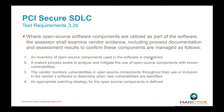Test requirement 3.2.b asks for: an inventory of open source components; a mature process to mitigate the use of open source components with known vulnerabilities; monitoring of open source components throughout their inclusion; and an appropriate patching strategy. Equifax was taken down because of an insecure third-party Struts component — the patch was released and attacks began just three days later. An appropriate patching strategy means moving fast: under 24 hours.